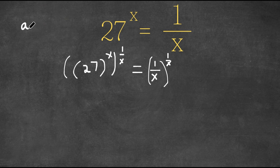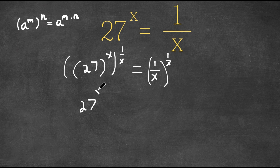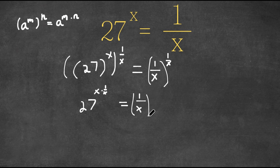If we have something in the form a to the power of m to the power of n, this is actually equal to a to the power of m times n. So as you can see right here, we have 27 to the power of x to the power of 1 over x — think of x as m and 1 over x as n. So we simply multiply these two, giving us 27 to the power of x times 1 over x, which is still equal to 1 over x to the power of 1 over x.